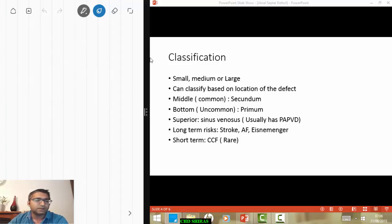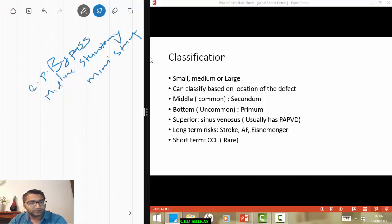For those other indications and the secundum defect without adequate rims, you will have to resort to surgical treatment. So obviously surgery is done on bypass, so that's cardiopulmonary bypass. You need a midline sternotomy or a mini sternotomy. Some surgeons do a bikini line incision for girls especially, which can be quite cosmetically more acceptable than a midline sternotomy.